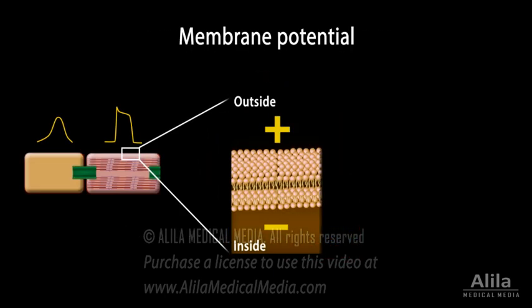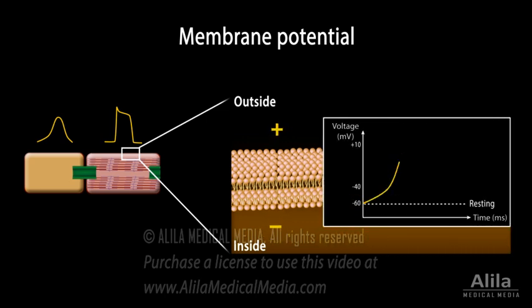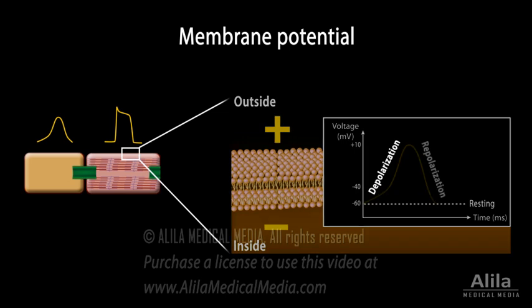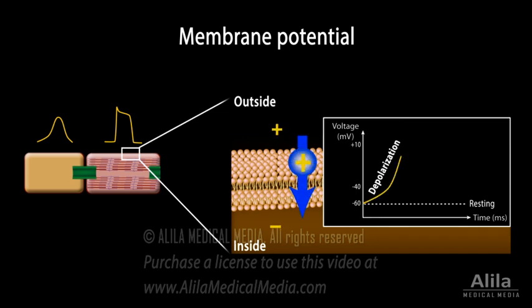Cells are polarized — they have different electrical charges across their membrane. A resting cell has a negative membrane potential. When membrane potential increases and becomes less negative, the cell is depolarized. Conversely, when membrane voltage becomes more negative, the cell is repolarized. Depolarization is due to net influx of positive ions, while repolarization is due to net efflux of positive ions.